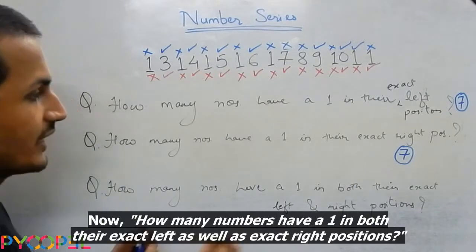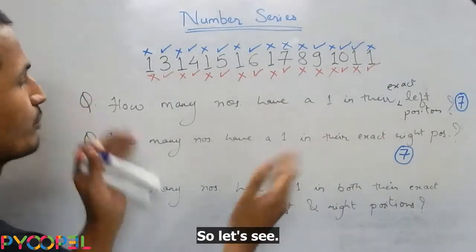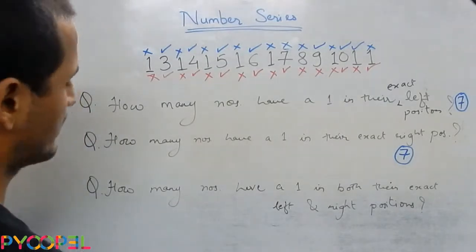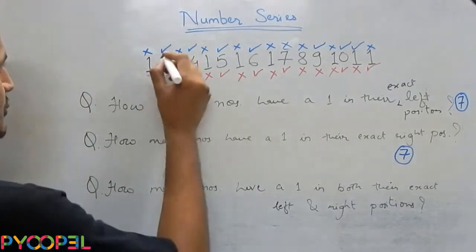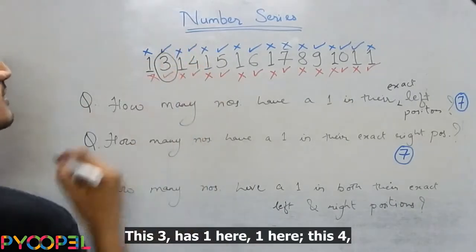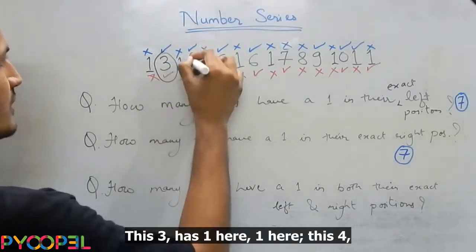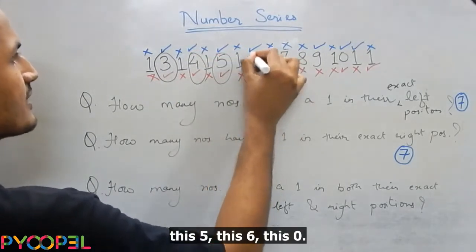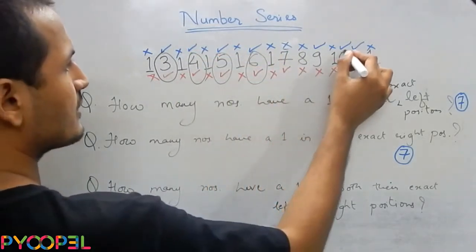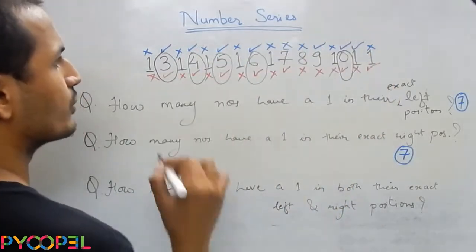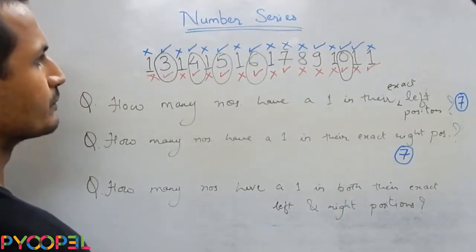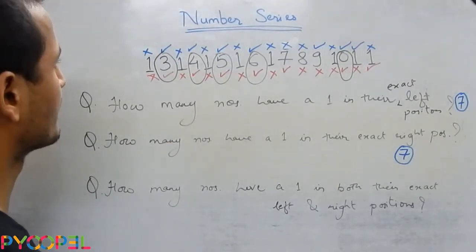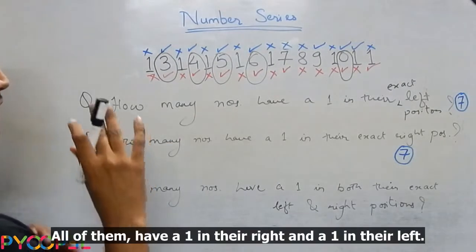Now, how many numbers have a 1 in both their exact left as well as exact right position? So let's see. This 3 has a 1 here and a 1 here. This 4, this 5, this 6, this 0—all of them have a 1 in their right and a 1 in their left.